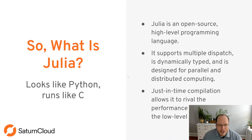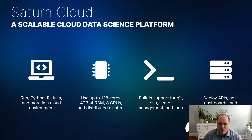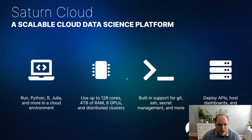The second part of this topic is using Julia on Saturn Cloud. Saturn Cloud is a scalable cloud data science platform. It allows you to run Python, R, Julia — any language that you really want to — in a cloud environment, on scalable hardware and software. It's got built-in support for Git repos, SSH, secret management, and a lot more. You can go end-to-end, from notebooks all the way up to using jobs and deployments.